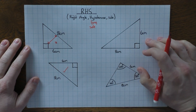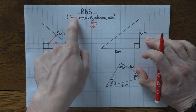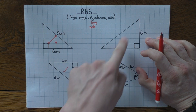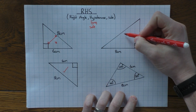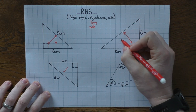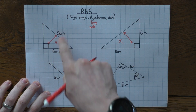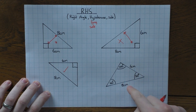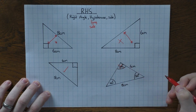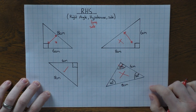Looking at the other options to show why they don't work: the first has a right angle and a side of 8, but 8 is not the hypotenuse — it's not the longest side opposite the 90 degrees — so that's out. The second has sides 6 and 8, and 8 looks like the hypotenuse since it's opposite that angle, but that angle is not 90 degrees, so it's not a right-angled triangle and we can't use this rule.